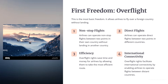First Freedom of the Air: Airlines can operate non-stop flights between two points in their own country without landing in another country. Airlines can also operate direct flights between two points in different countries. Overflight rights save time and money for airlines by allowing them to take the most efficient route.